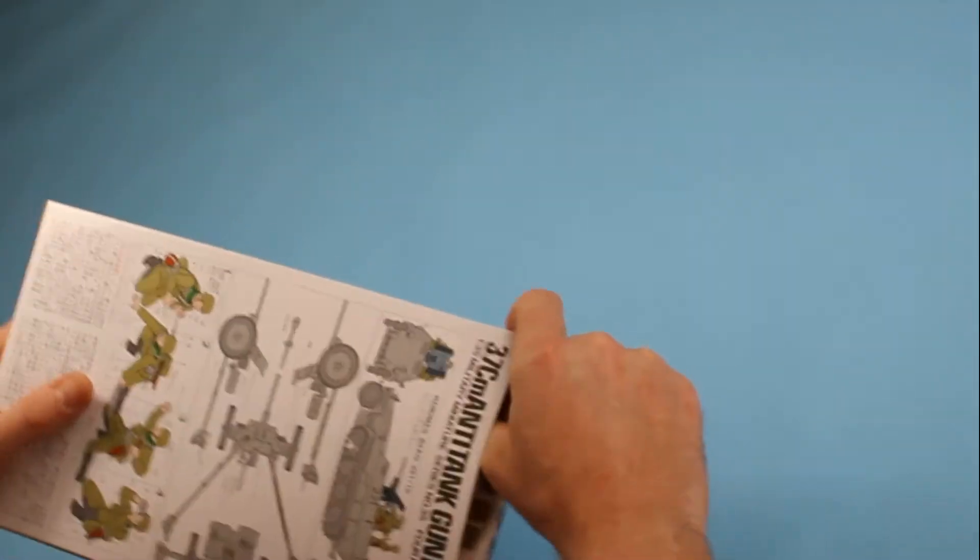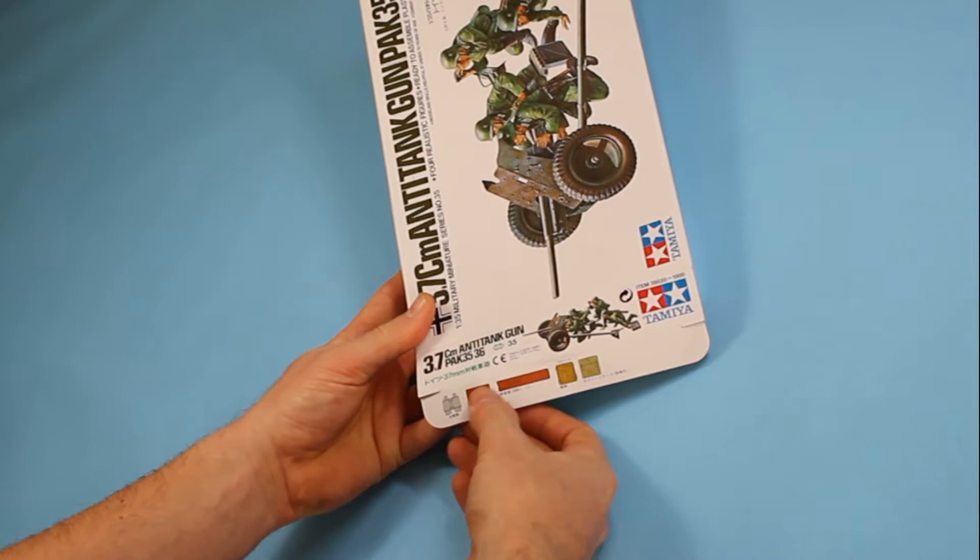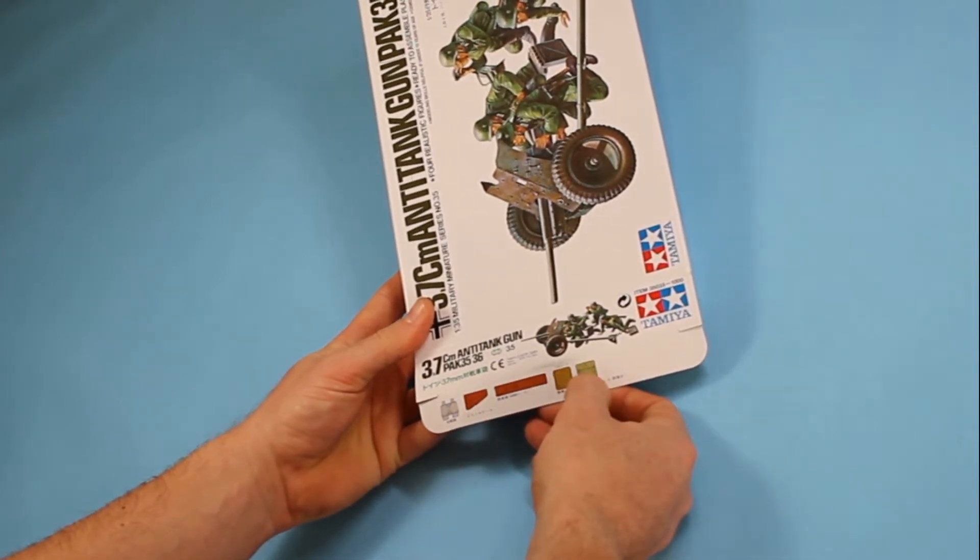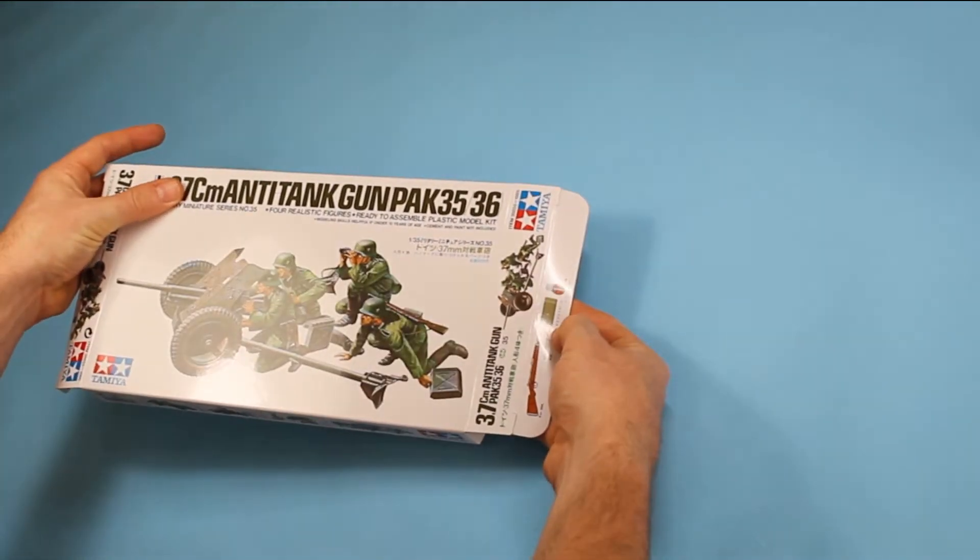And then on here you've got a bit of the insignia for the figures which is also useful. You also get information on the flaps here as well. This side's got a few bits for the soldiers and then there's the weapons and a few other parts. So that's very good from the box.